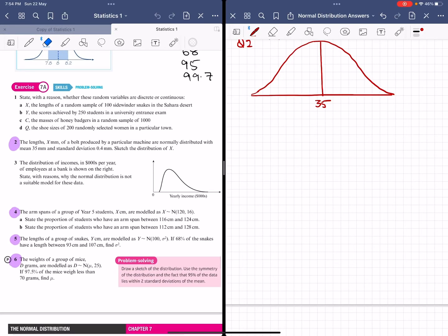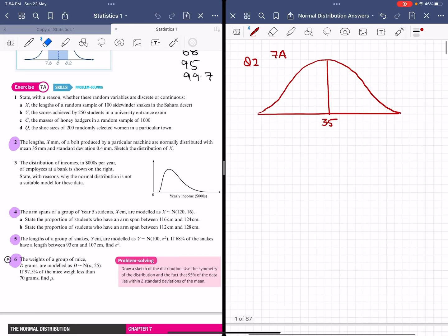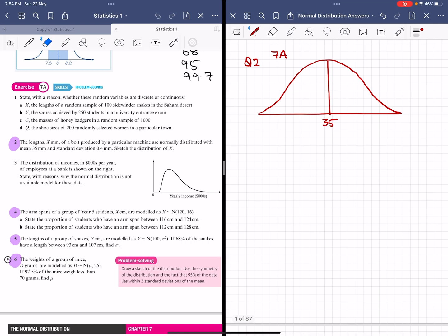This is question number two. The length X in millimeters of a bolt produced by a particular machine is normally distributed with a mean of 35 millimeters and standard deviation 0.4 millimeters. Sketch the distribution of X.